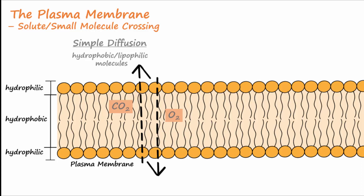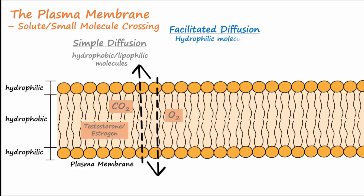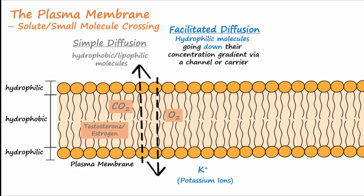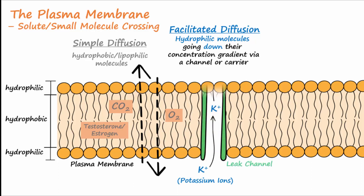Examples include oxygen or carbon dioxide molecules entering or exiting the cell through the membrane. Testosterone or estrogen are other hydrophobic molecules transported in this manner. The next method is facilitated diffusion, which involves a transport protein that allows hydrophilic molecules to go from high to low down their gradient. Potassium ions going from high to low through the potassium leak channels is an example of this type of transport.